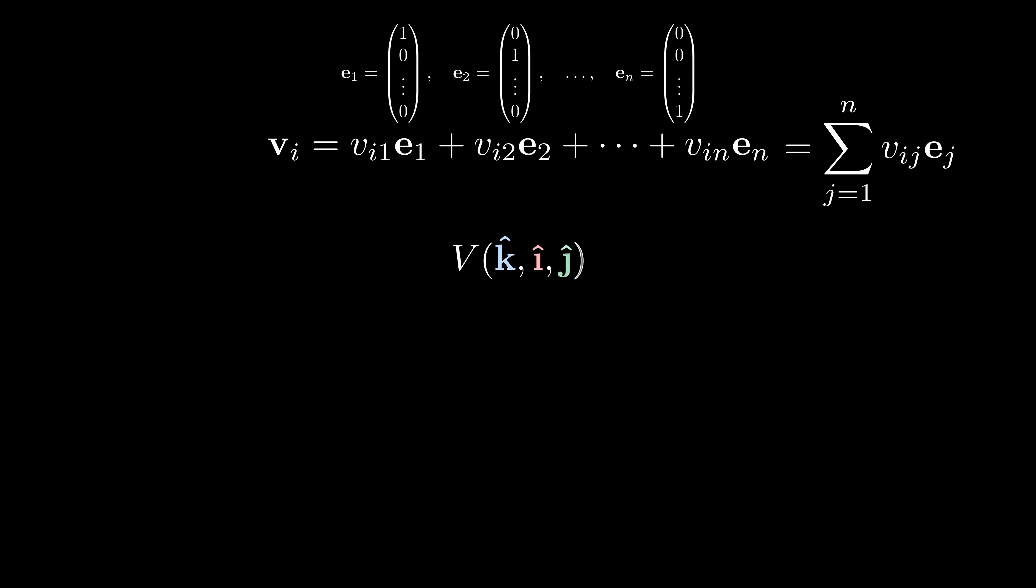Now, let's look more closely at the permutation idea from just now. Each time we swap two vectors, a minus sign pops out, and so the goal is to arrange the subscripts in the i, j, k or 1, 2, 3 order, since we know that the volume of the unit cube is 1. Put this way, the V function isn't really important.